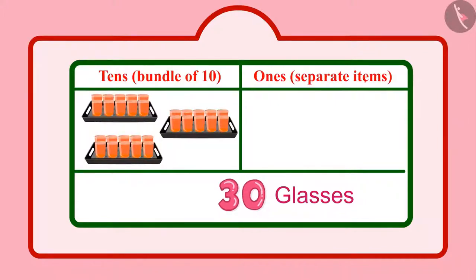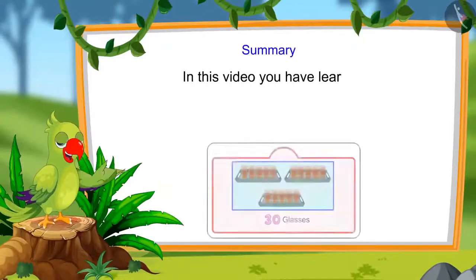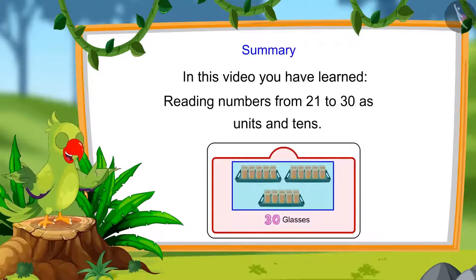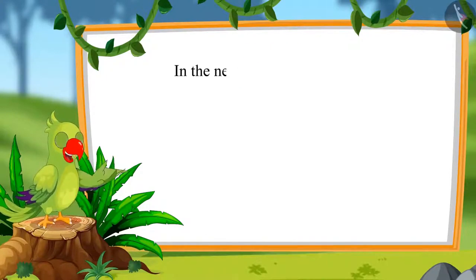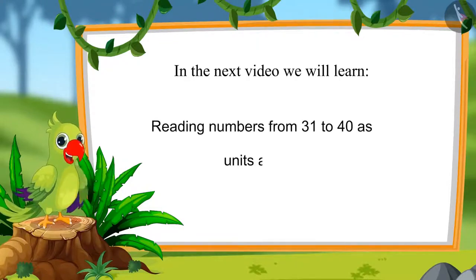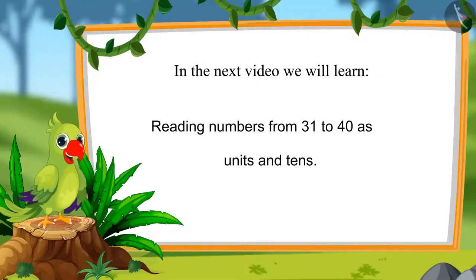So children, today 30 glasses of sherbet were made in Chotu's house. That was all for today. In this video, you learned numbers from 21 to 30 and how to read those numbers as units and tens. In the next video, we will learn to read numbers from 31 to 40 and how to read those numbers as units and tens. Until then, bye children.